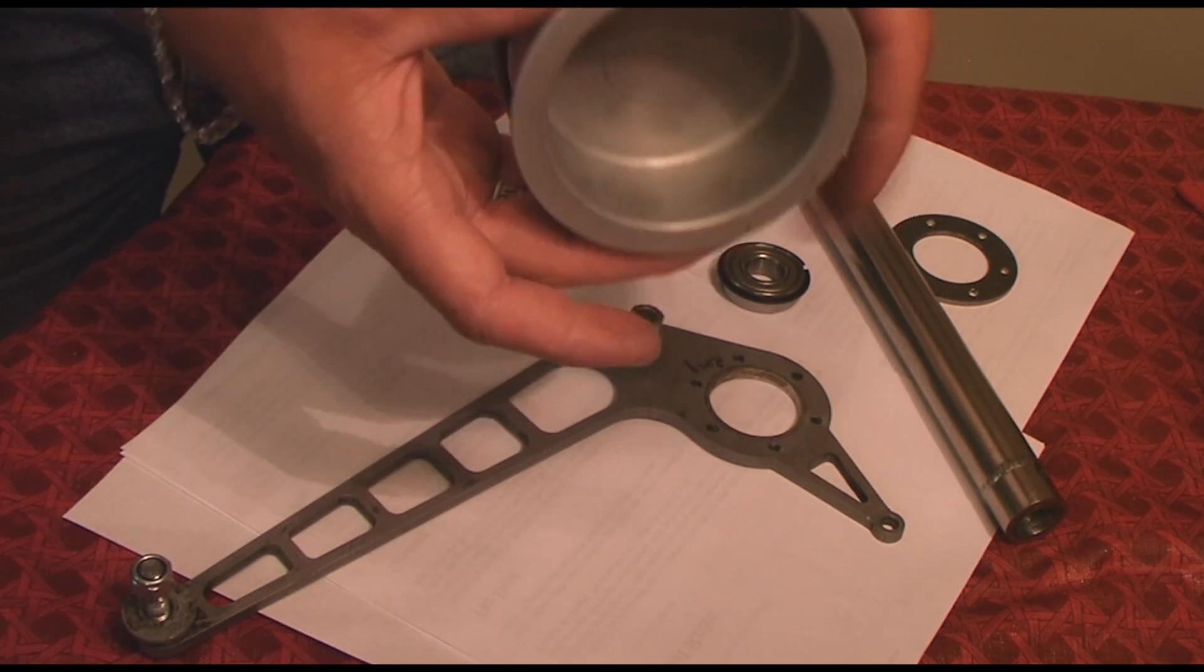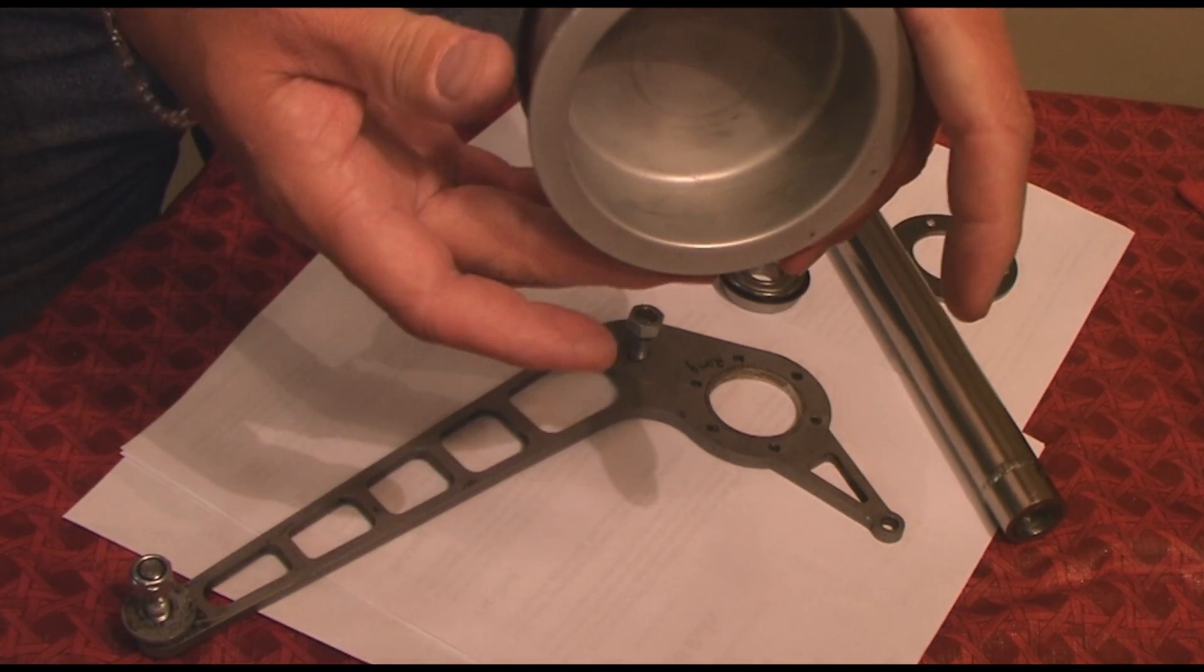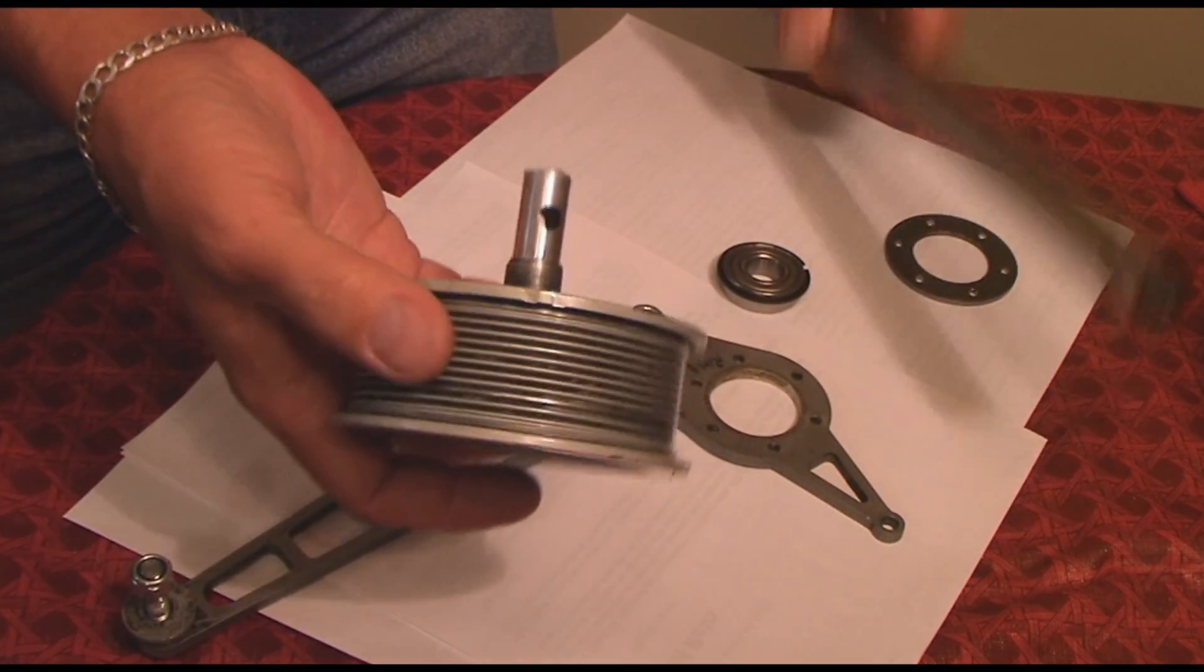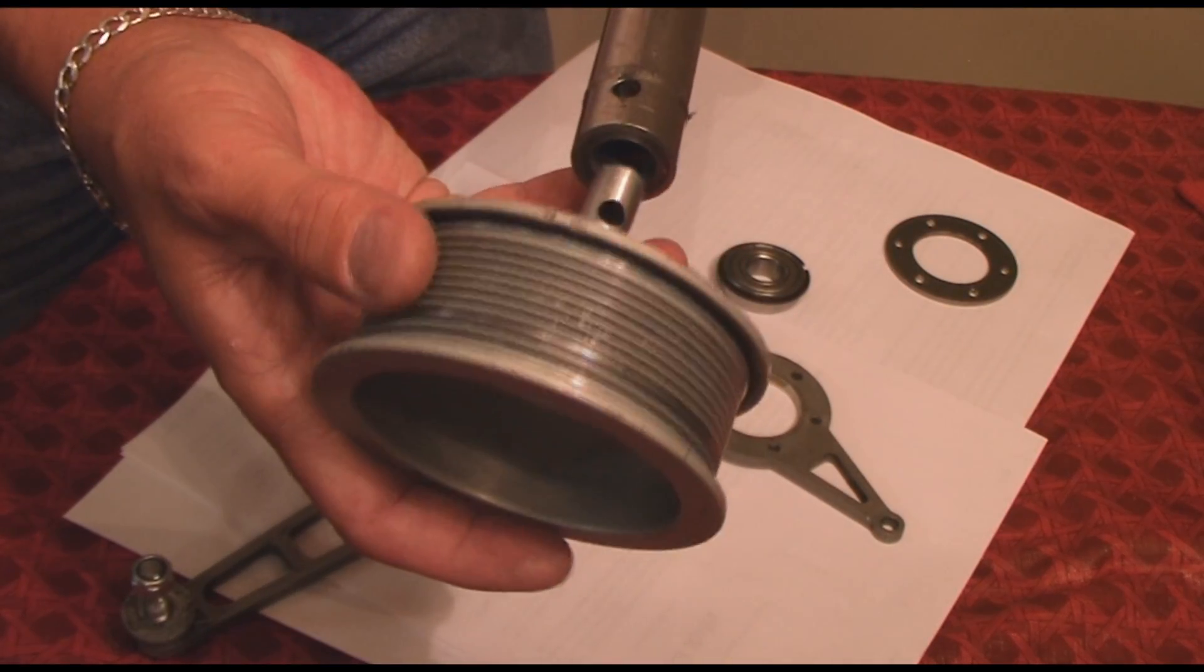When the pre-rotator is engaged, it puts tension on the belt and pulley. The pulley slides into the shaft like this.